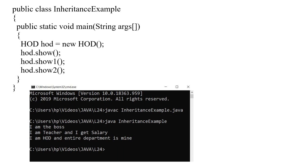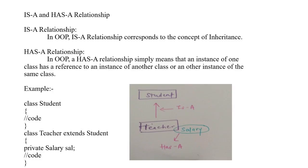Let us now discuss the IS-A and HAS-A relationships. In OOP, the IS-A relationship corresponds to the concept of inheritance. The HAS-A relationship means that an instance of one class has a reference to an instance of another class, or another instance of the same class. For example, class Student has some code inside it, and class Teacher extends Student. Teacher also has a variable of type Salary. Student and Teacher are related by the IS-A relationship, while Teacher and the variable of type Salary are related by the HAS-A relationship.